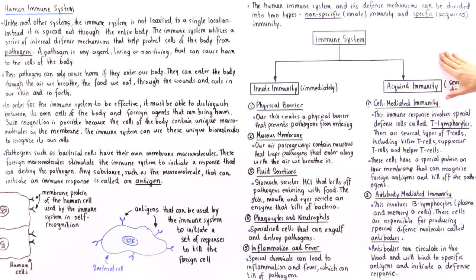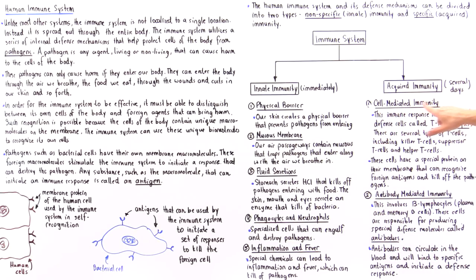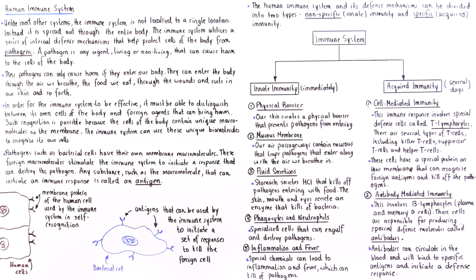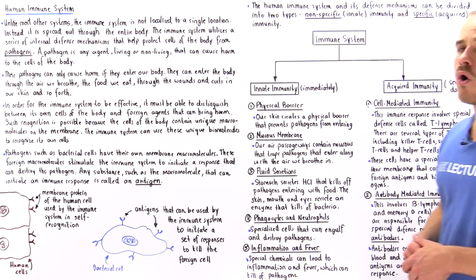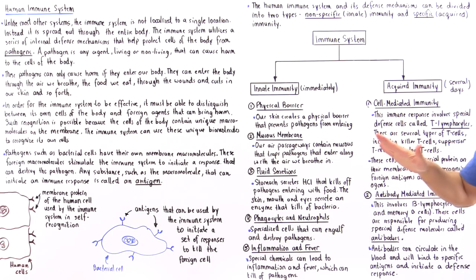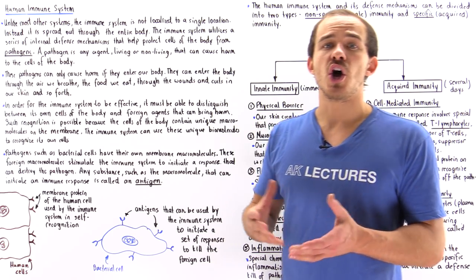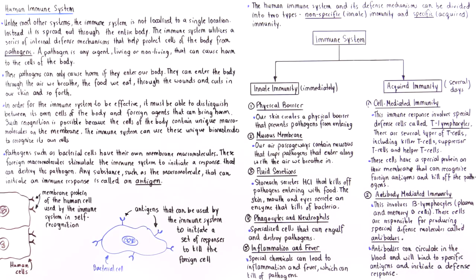Let's move on to acquired immunity. We have two divisions of acquired immunity, which usually takes several days to kick in. We have cell-mediated immunity, also known as T cell immunity, and we also have antibody-mediated immunity, also known as B cell immunity or humoral immunity. The major difference is that cell-mediated immunity uses a type of cell known as a T lymphocyte or T cell, while antibody-mediated immunity uses a type of cell known as a B lymphocyte or B cell, along with a special biological molecule known as an antibody.